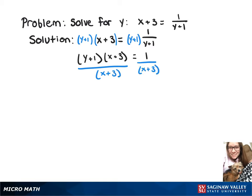And we're left with y plus 1 equals 1 over x plus 3. Now we'll just subtract 1 from both sides, and that gives us y equals 1 over x plus 3 minus 1.